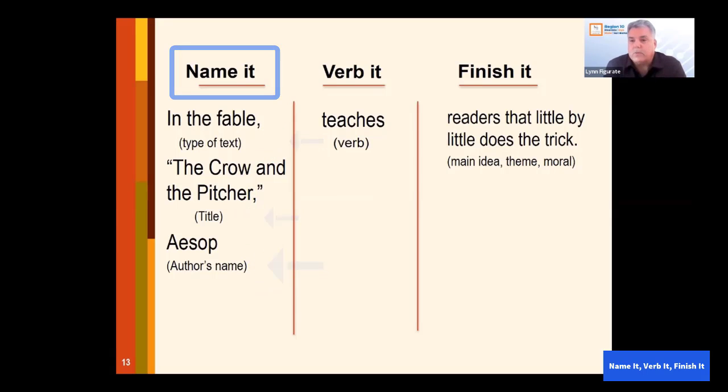Type of text is a really good way of saying that. It's not always a genre. Here in the fable, it is a genre, but it's not always a genre. Sometimes it's a scientific activity or an experiment that we're doing.